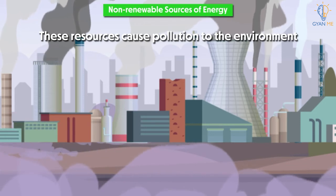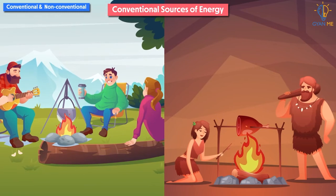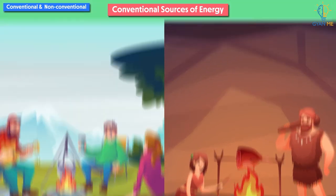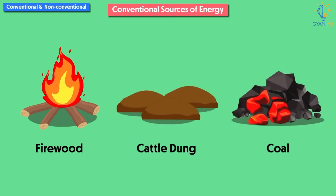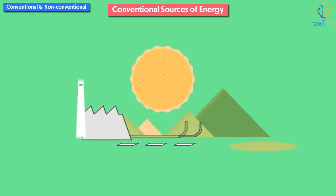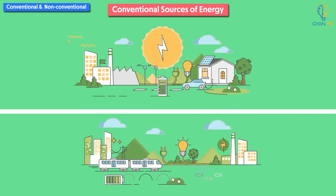Now let us see the last type of classification — that is, conventional and non-conventional sources of energy. Conventional sources of energy are those sources which have been used since the beginning, that is, olden times. For example, firewood, cattle dung, coal, etc. With time, we have also learned different ways to use these conventional sources of energy. But due to their over-consumption, they have got exhausted and their scarcity is created.